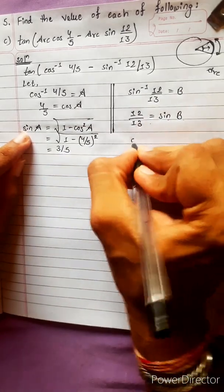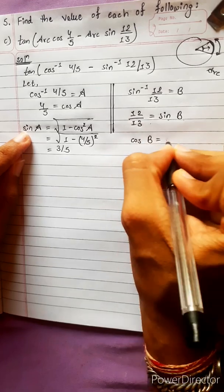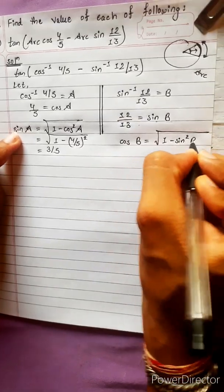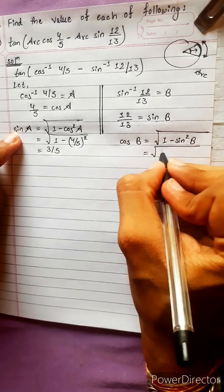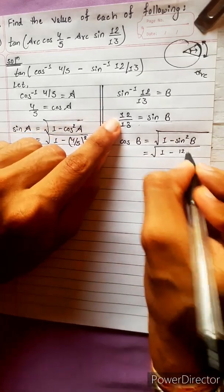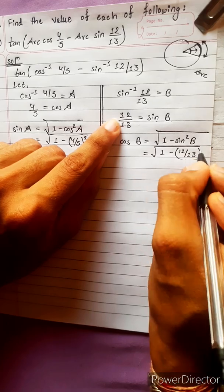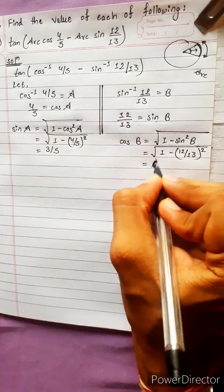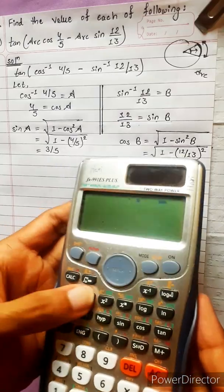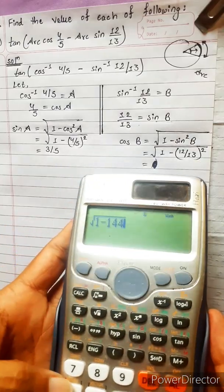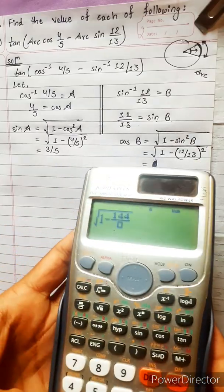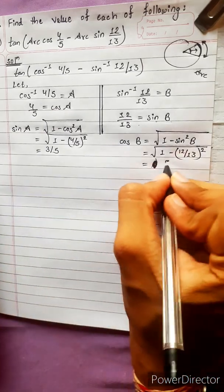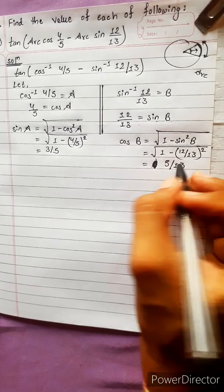Now we have sin b, and we need cos b. Cos b equals under root of 1 minus sin squared b, which is under root of 1 minus (12/13) squared, giving under root of 1 minus 144 upon 169. That gives cos b equals 5 by 13.